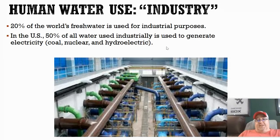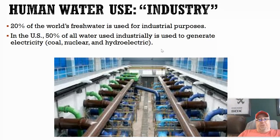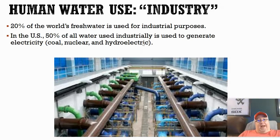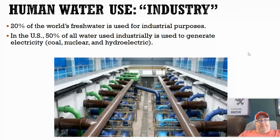One of the biggest industrial uses of water is the generation of electricity. Every time we plug in our cell phones, turn on a light, or charge our computers, we're actually using a lot of water to generate that electricity. In the United States, 50% of all water used for industrial purposes is used to generate electricity — that's a lot. We'll talk about how electricity is generated in the next unit.